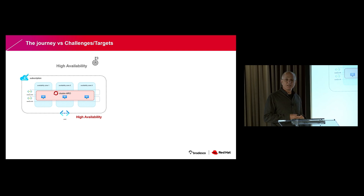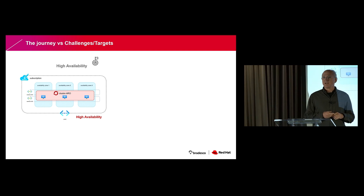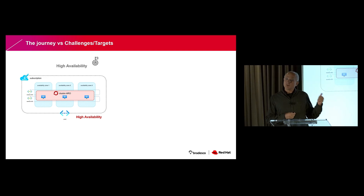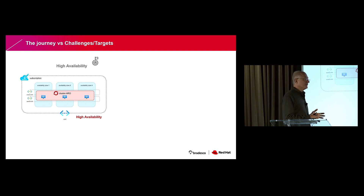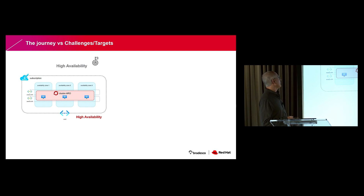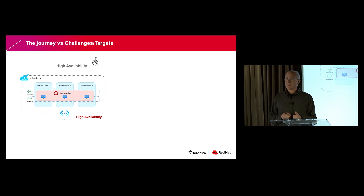The next point is about high availability — it's a requirement of the bank to have high availability across all infrastructure. Using ARO, all the infrastructure is deployed in a multi-zone approach. In this case, we now have all the nodes of the clusters in three different availability zones in Azure, providing the high availability required by the bank.